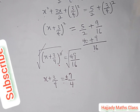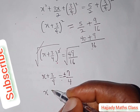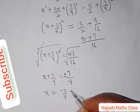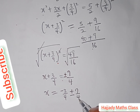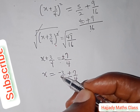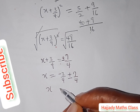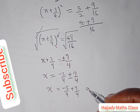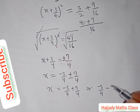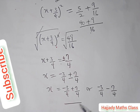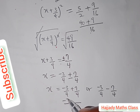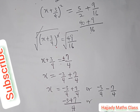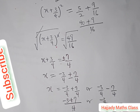Solving further, x = -3/4 ± 7/4, giving two possible values. The first case: x = -3/4 + 7/4. The second case: x = -3/4 - 7/4. The LCM is 4, so the first gives (-3 + 7)/4 and the second gives (-3 - 7)/4.